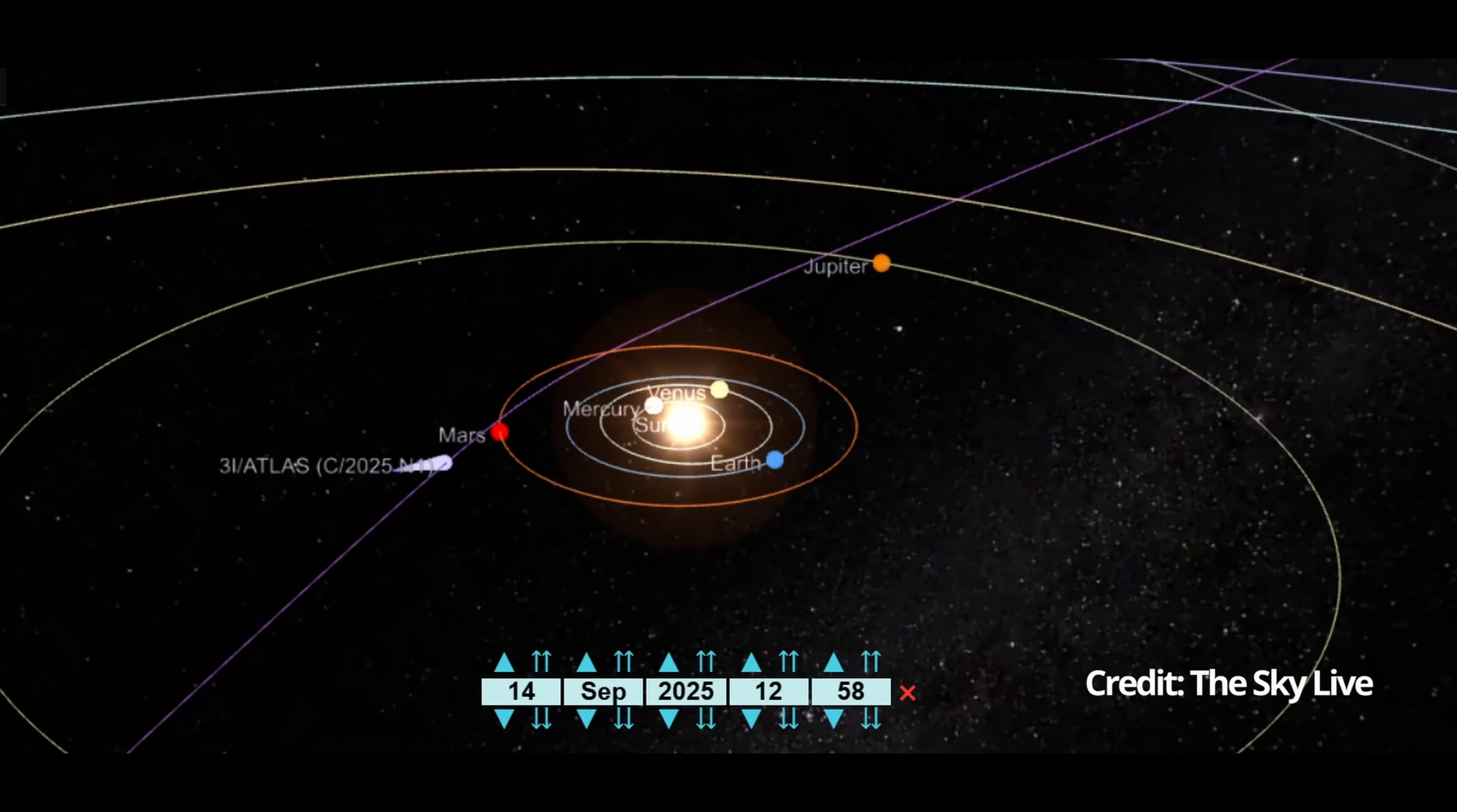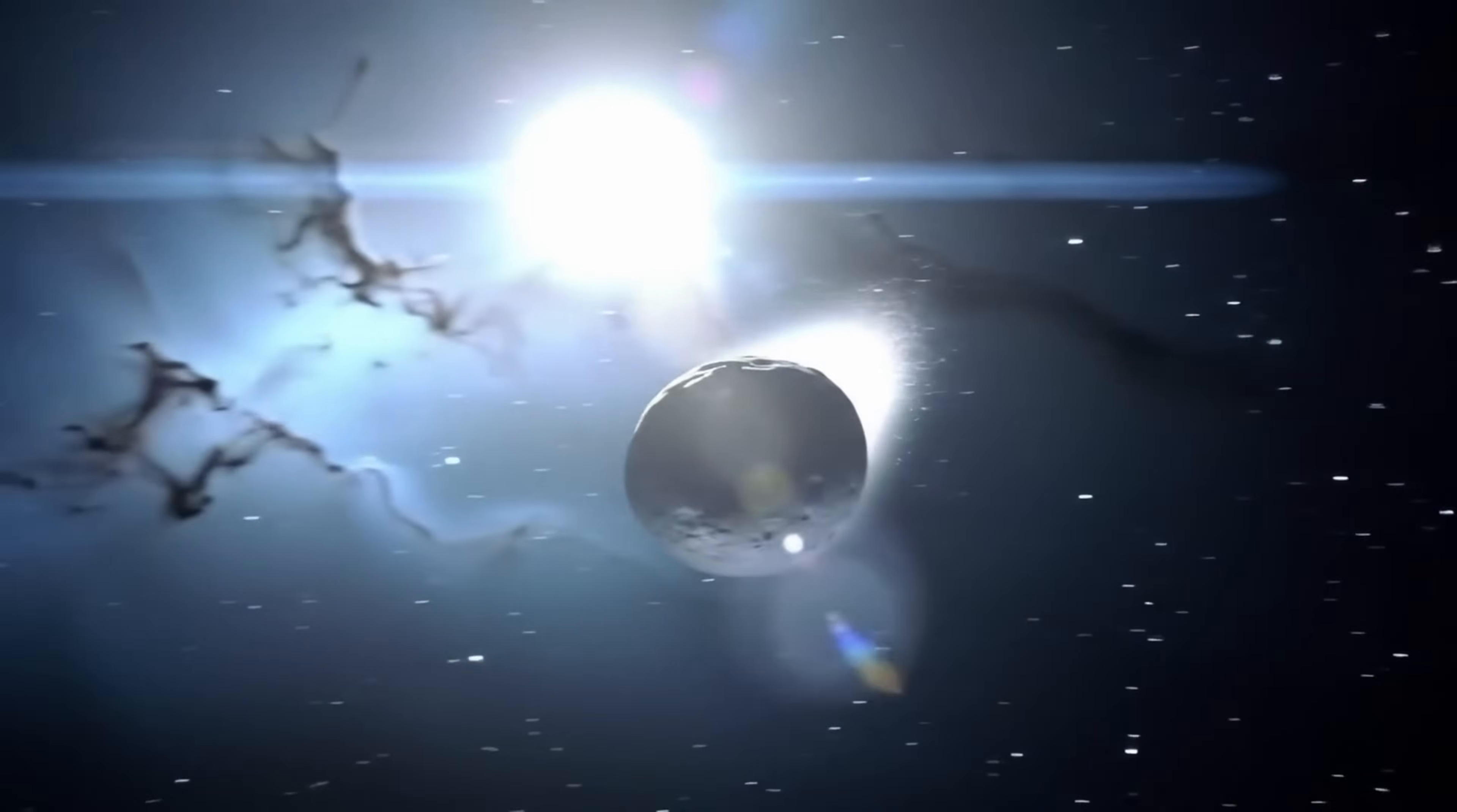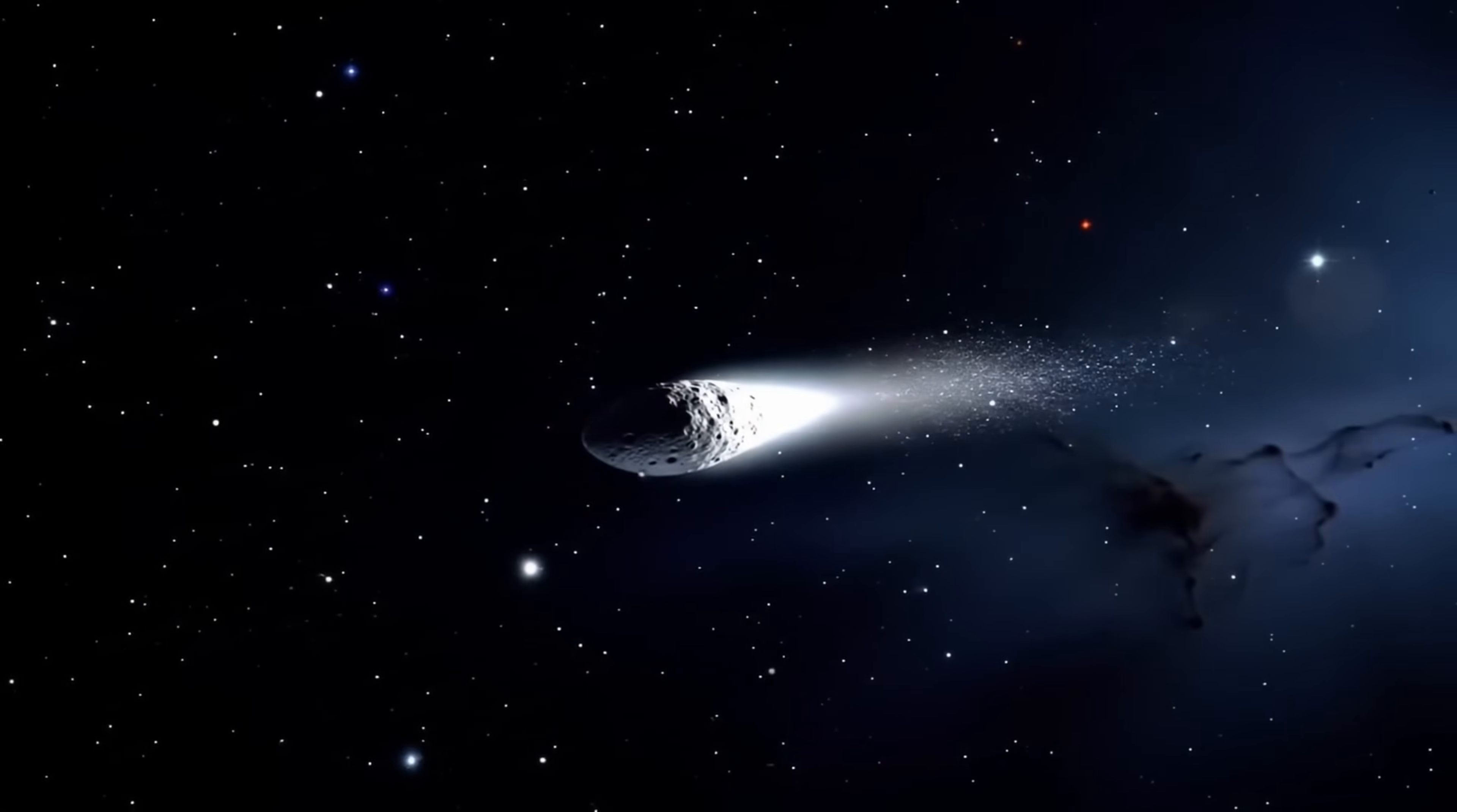Initially 3I/ATLAS looked like a rare interstellar visitor. It had a hyperbolic trajectory, the unmistakable signature of something arriving from outside our solar system. This made it only the third such object ever detected. It's moving more than 130,000 miles per hour, so fast that the sun's gravity cannot reel it back. Its path is a one-way ticket. It entered from the stars and it will leave to the stars again.